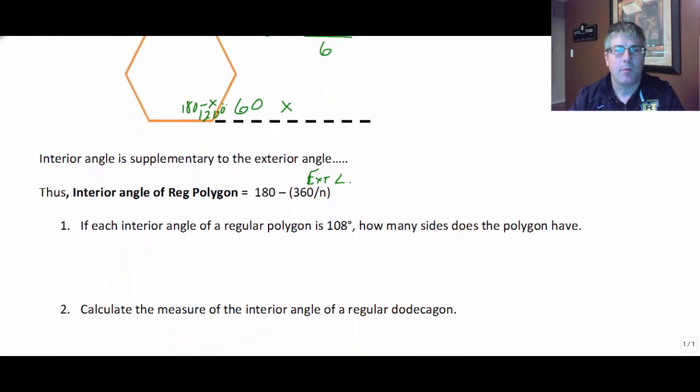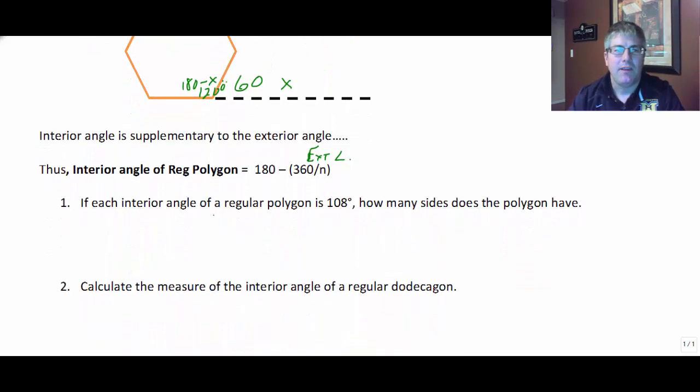So let's take a look at a couple sample problems. If each interior angle of a regular polygon is 108 degrees, how many sides does the polygon have? Well on a problem like this, I like to draw what looks like the interior and the exterior angle of one polygon. And it doesn't really matter how many sides it has. I'll just do one of the vertices. So I know that the interior is 108. Well since I know that these are supplements, I should know that the exterior angle is 72.